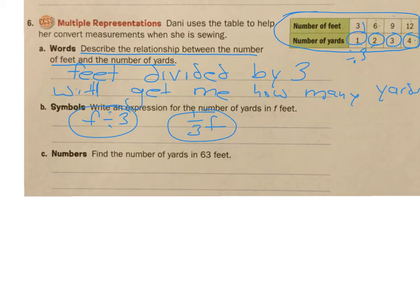Now we have the number of yards in feet. It wants us to find the number of yards. So we want to find the number of yards. We know that we have 63 feet, so f equals 63.